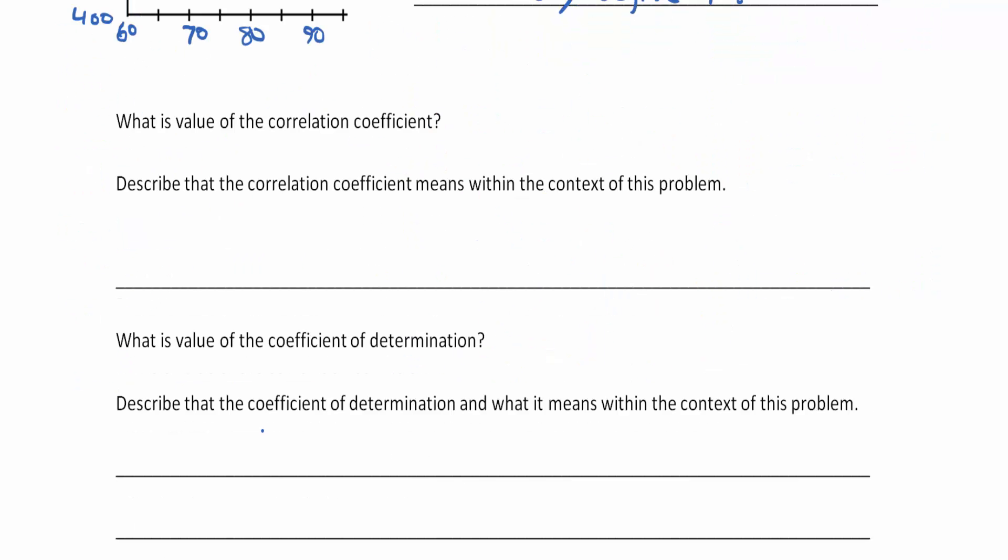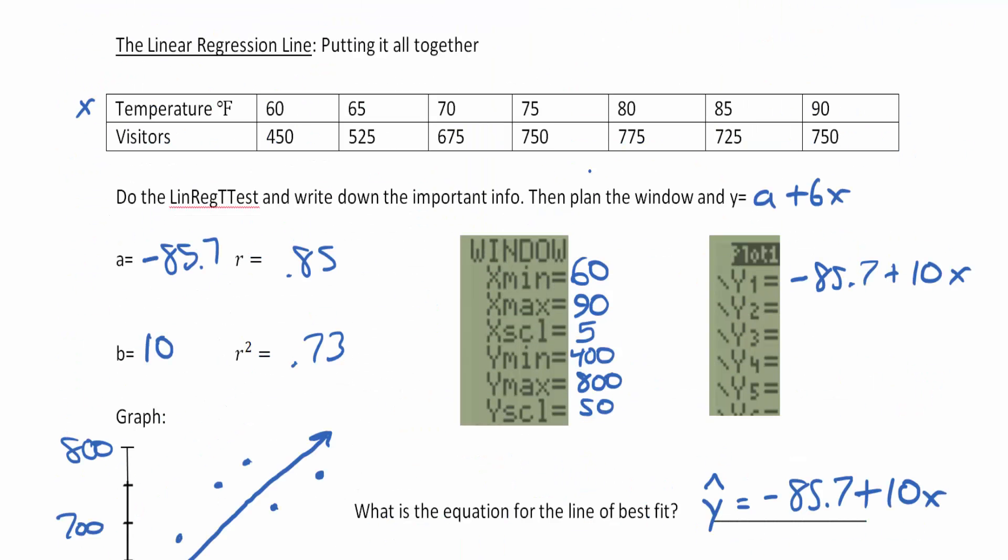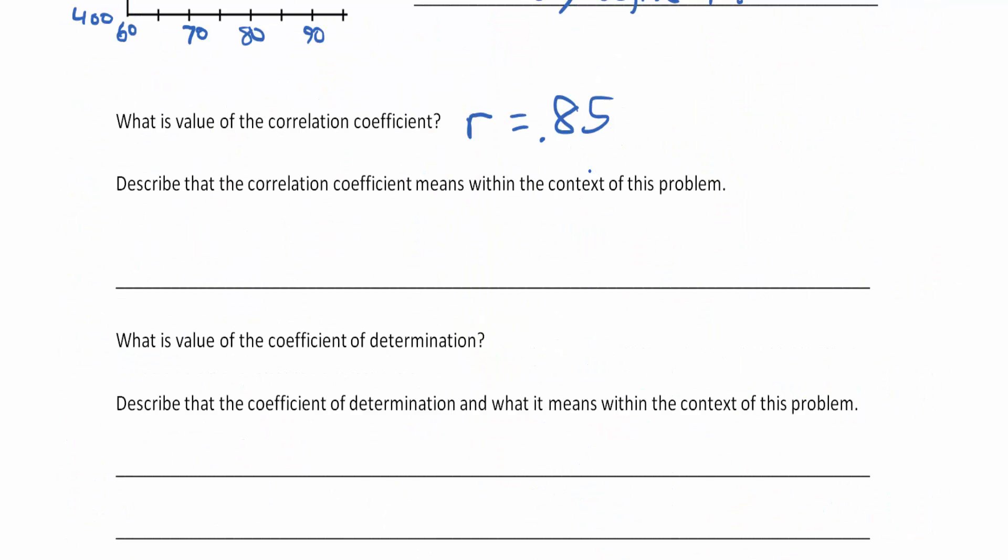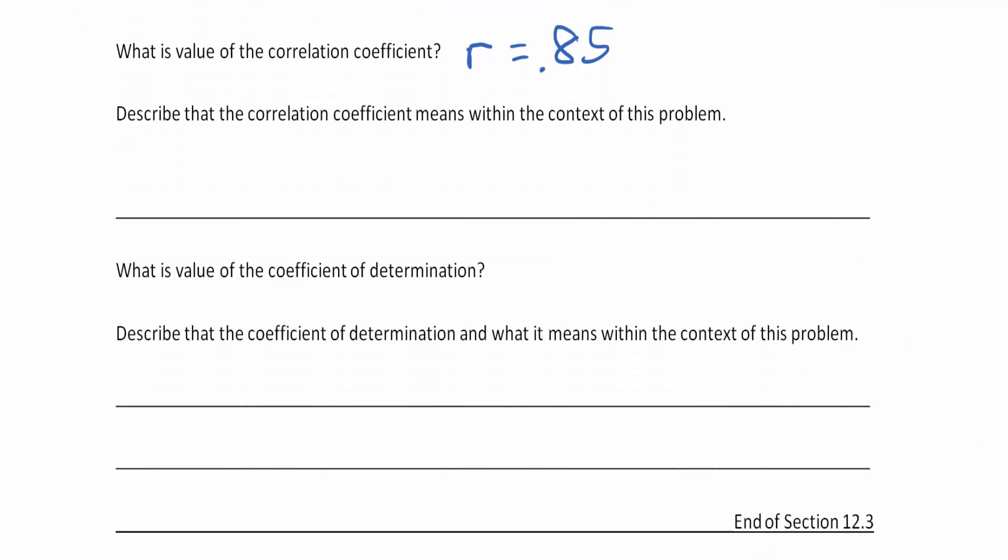Now what is the value of the correlation coefficient? According to our data, the r is equal to 0.85. You'll notice we wrote down the r value here, but the book in the XYZ homework is going to use its formal name, the correlation coefficient.